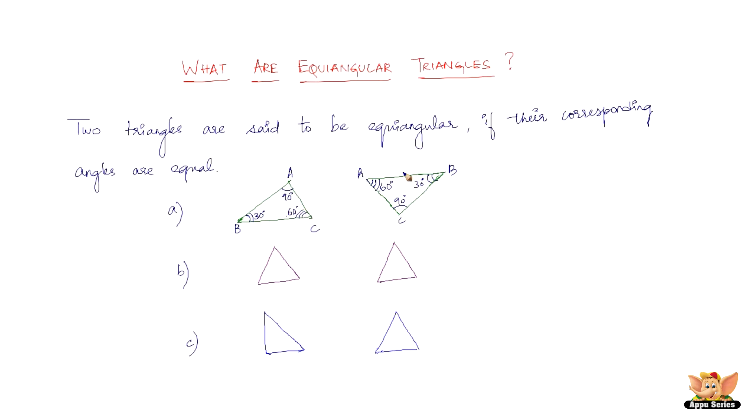That is when you call two triangles equiangular. For these two triangles, it's pretty simple—you can see this angle equals this angle, this equals this angle, and this angle equals this angle, so their corresponding angles are equal.